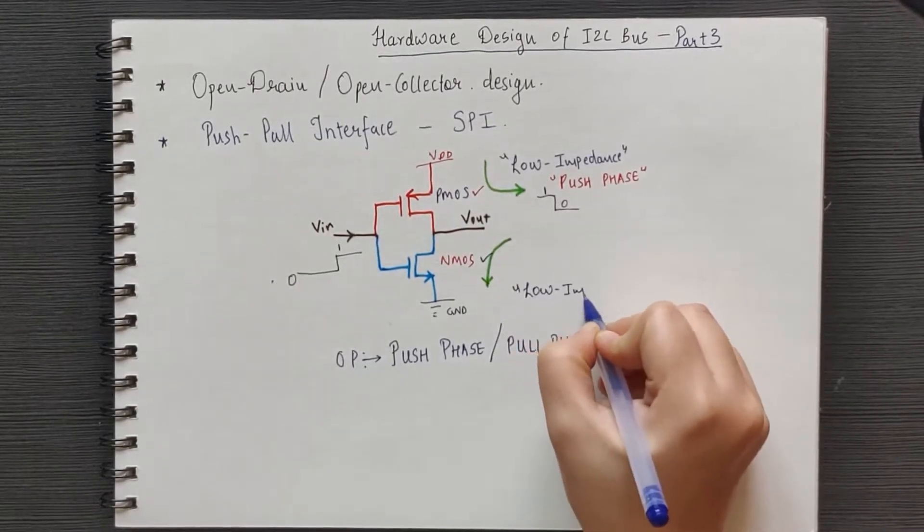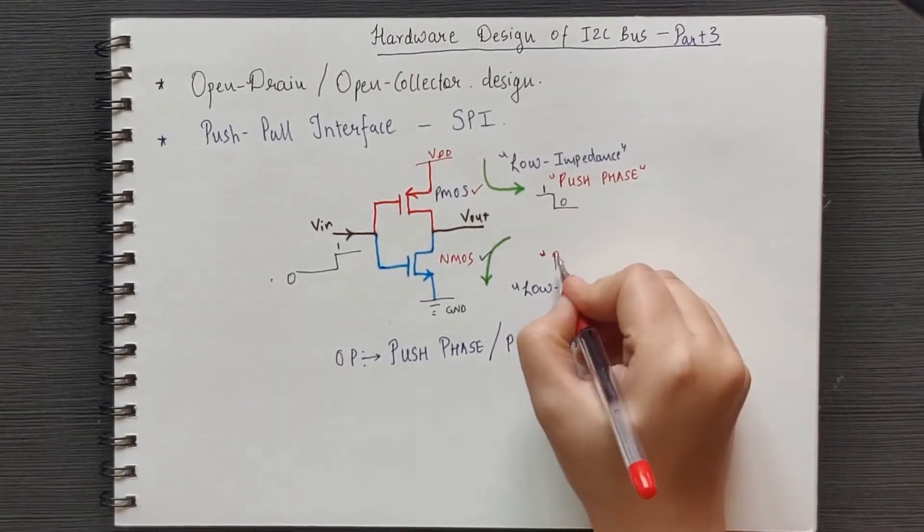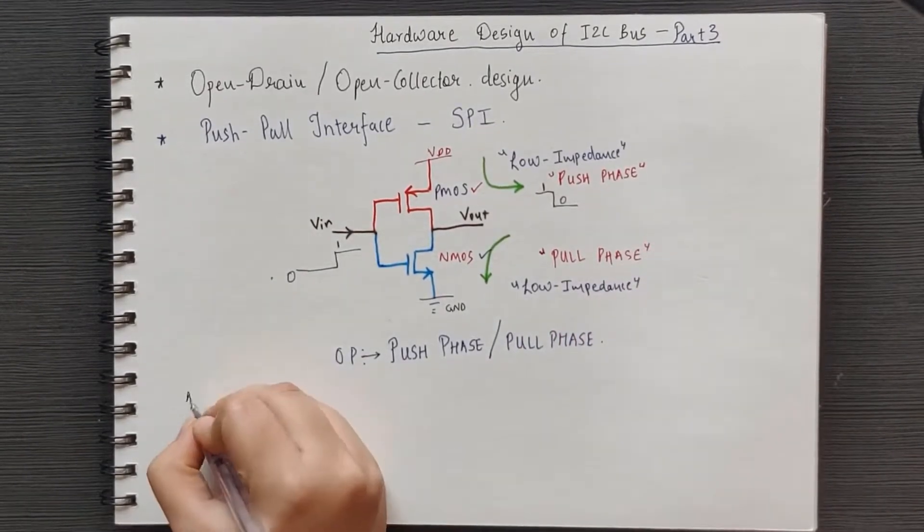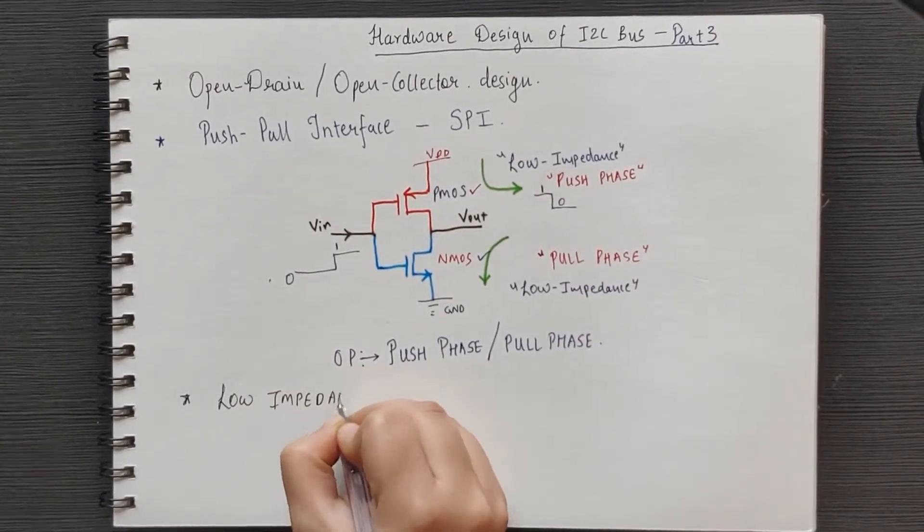The output has a low impedance connection to ground. This is pull phase. That's how you get push-pull output stage.